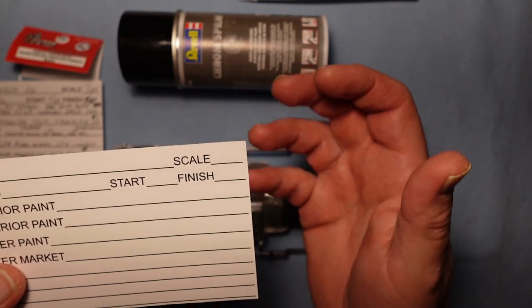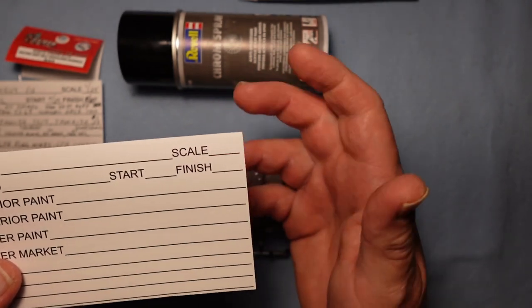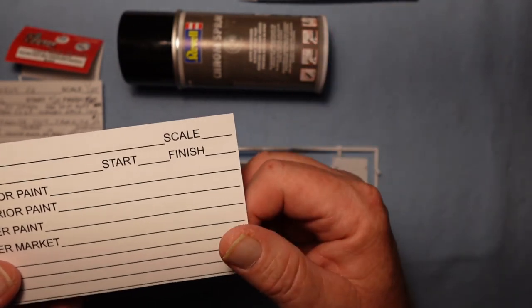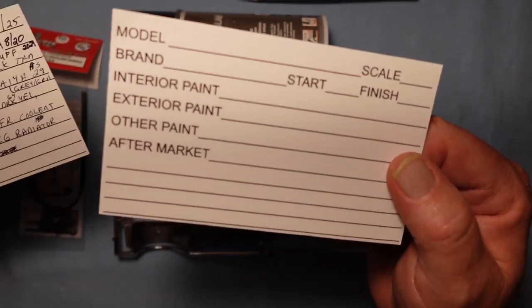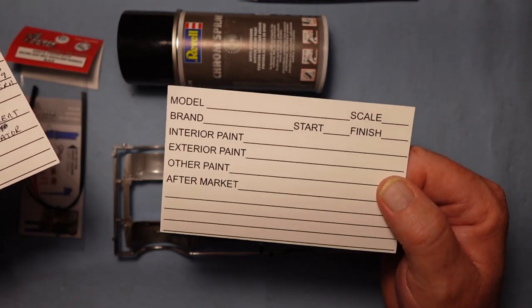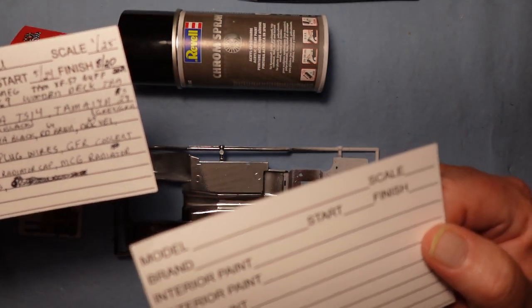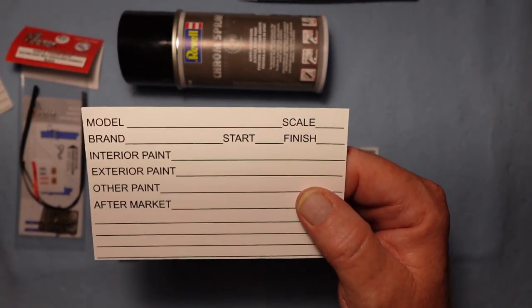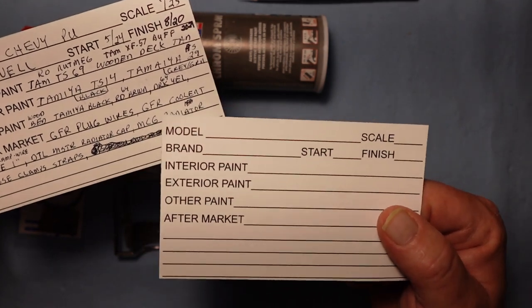I have a place for the model, the scale, what brand it is, the start time, the finish time. I have a place for all the interior paints I use, whether it's a two or three-toned interior with different color seats and dash. The exterior paint - sometimes it's a single color, sometimes it's two-tone, or you might have even a three-tone. The other paint is just for anything odd to do with the model. On this 41 Chevrolet pickup I completed, I listed the colors I used when I did the wood grain bed on the truck, and then of course the aftermarket - I list all the photo etch, all the lines, spark plug lines, wires, hose clamps, and so forth.